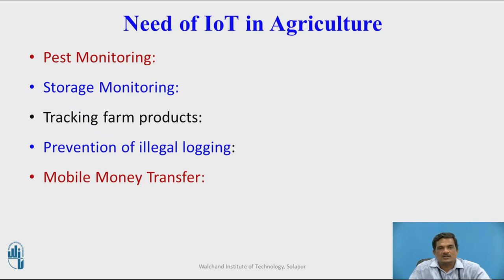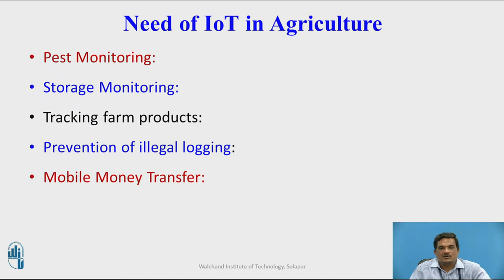Storage monitoring is usually used to store farm products, and IoT will enable users to store their farm products in a precise manner. It is also used to track farm products from their fields, to prevent illegal logging into their farm field, and to enable a farmer to transfer money through their mobile.